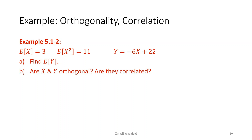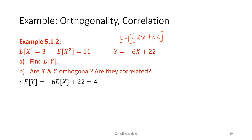Example on orthogonality and correlation: given E[X] = 3, E[X²] = 11, and Y = -6X + 22, find E[Y]. Taking the expectation: E[Y] = E[-6X + 22] = -6*E[X] + 22 = -6*3 + 22 = -18 + 22 = 4.